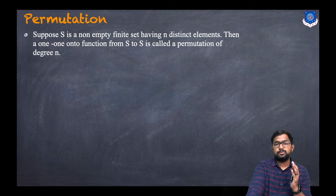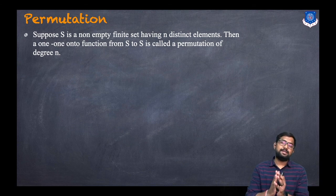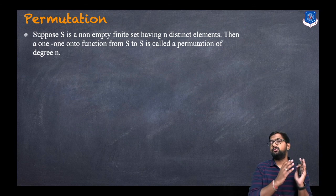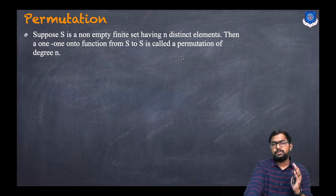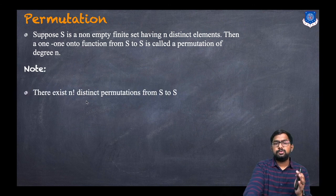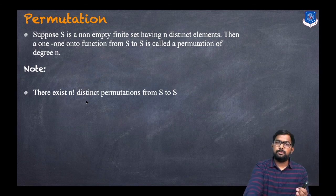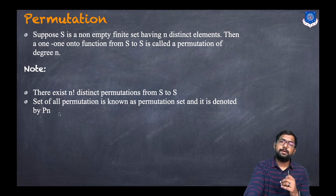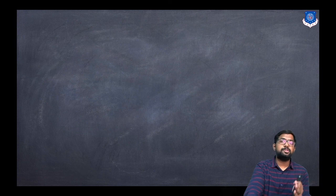Now let us discuss what a permutation is. Suppose S is a non-empty finite set having n distinct values. A one-to-one onto function from S to S is called a permutation of degree n. Note that there exist n factorial distinct permutations from the set S to itself, and the set of all permutations is known as the permutation set, denoted by P subscript n.